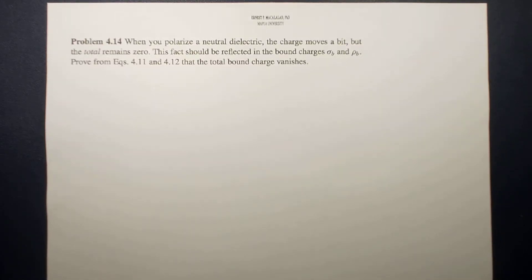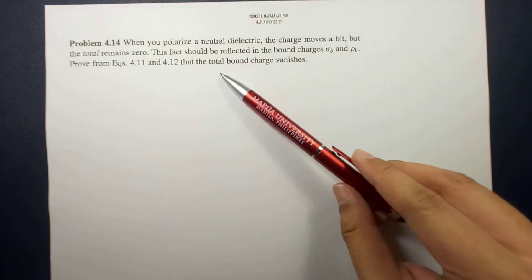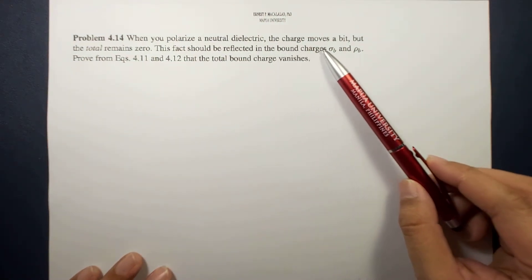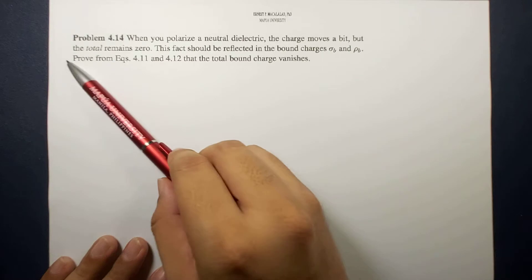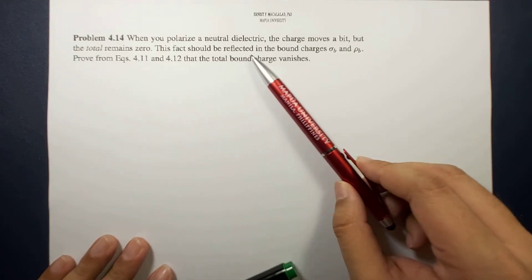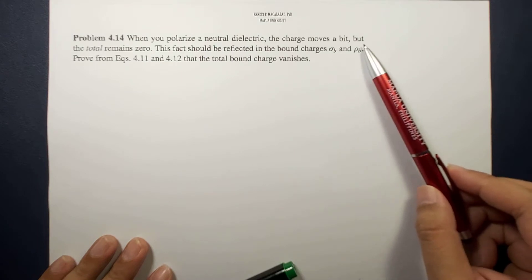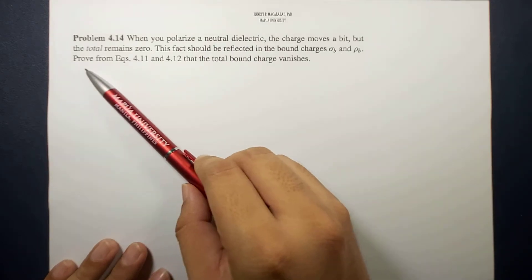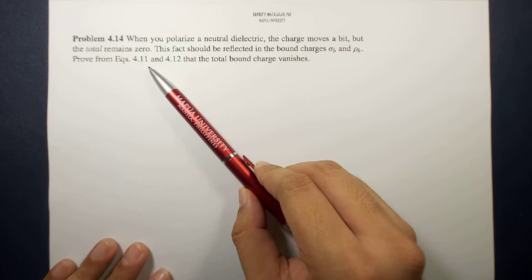What's up guys, it's me again Sir Ernest, and today we're going to solve problem 4.14 of your textbook Griffiths fourth edition. The problem reads: when you polarize a neutral dielectric, the charge moves a bit, but the total remains zero. This fact should be reflected in the bound charges sigma B and rho B. Prove that equations 4.11 and 4.12 that the total bound charge vanishes.